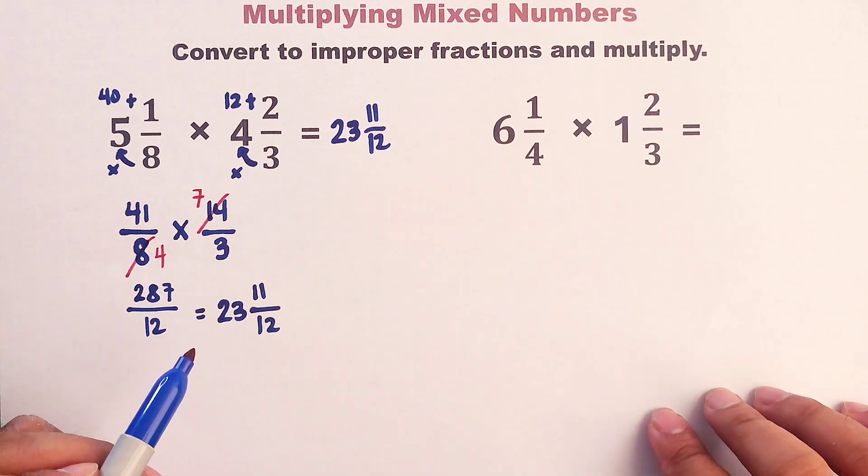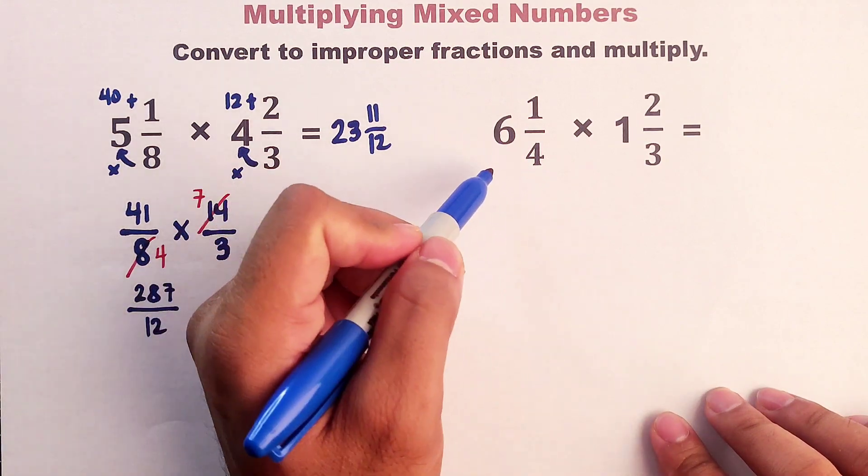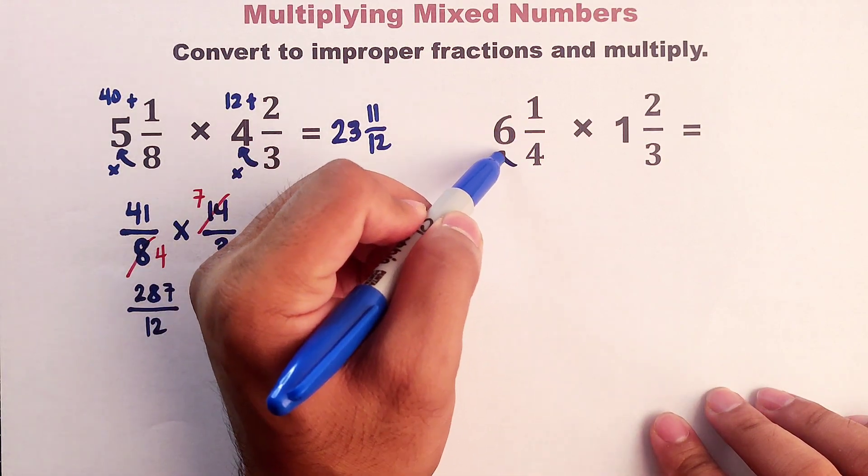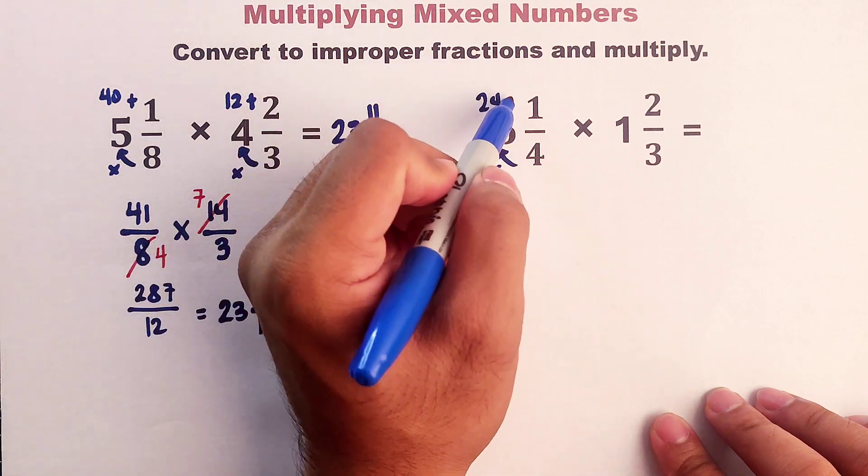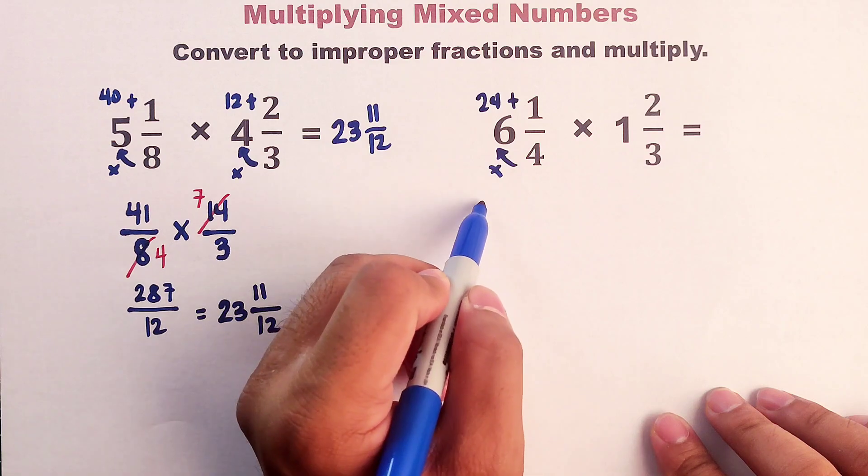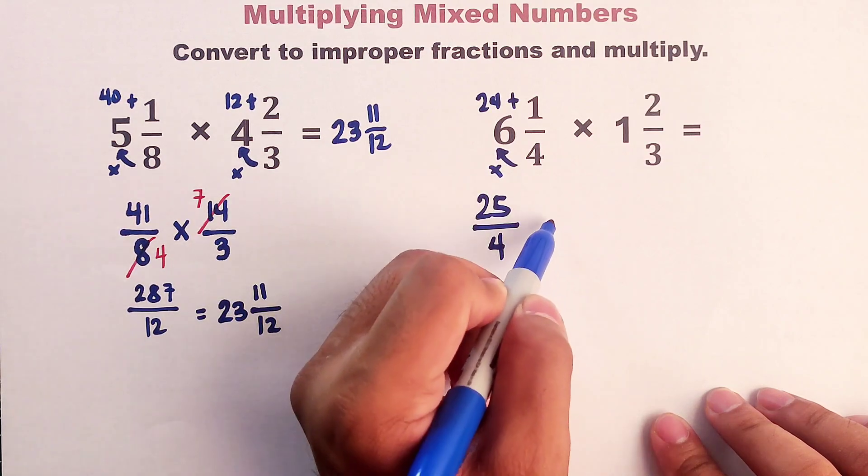Now let's continue with item number 2. For item number 2, same process. Convert 6 and 1 fourth to improper fraction. This will become 24, then plus 1. So that would be 25 over 4 times.